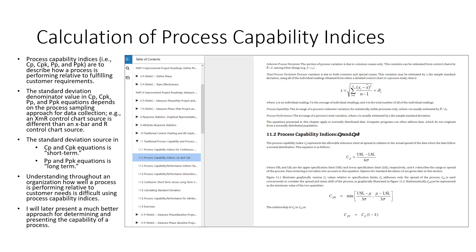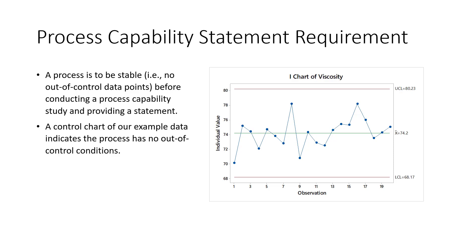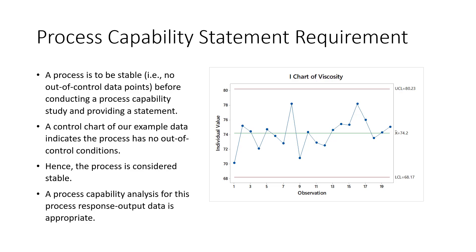I'll later present a much better approach for determining and presenting the capability of a process. The first thing that's very important before you make a process capability statement is for the process to be stable — that is, there are no out-of-control condition data points if we do a control chart of the data. For this particular situation, we don't have any out-of-control conditions, so we could go in and do an analysis of this stable process and report out a process capability assessment.